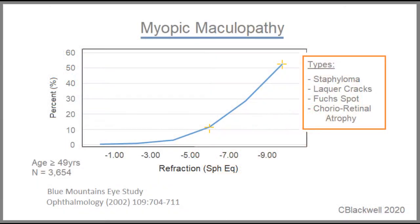The frequency of maculopathy increases with increasing level of myopia. In this Australian study, in those with minus 5 to minus 7 diopters of myopia it occurs in a little over 10%, and in those with greater than minus 9 diopters of myopia it occurs in more than 50%.